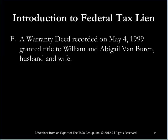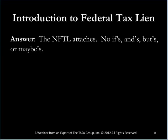Example F: This is the straightforward example. You did the title search at the Clerk of Circuit Court of St. Johns County. You found the federal tax lien recorded against William and Abby. They own the property — right title and interest, all theirs. There is no doubt, no ifs, ands, buts, or maybes: the federal tax lien attaches to this property.